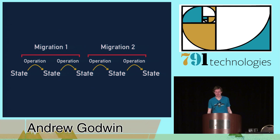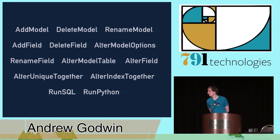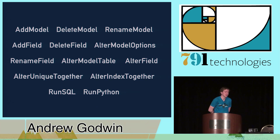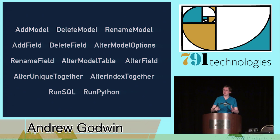These are the operations we ship with — quite a few of them. The most important ones you might not know about are RunSQL and RunPython. Migrations are meant to be writable and editable. RunSQL: you give it some SQL, it runs it. RunPython looks basically like an old South method — you get two arguments: apps (like the old ORM object) and a schema editor, and you can do whatever you like. RunPython is for data migrations, really complicated changes, adding stored procedures, and so on.